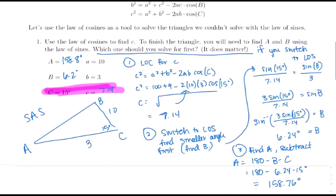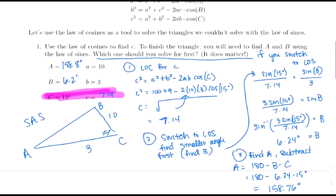Strategy summary: for side-side-side, find the biggest angle with the Law of Cosines first, then switch to the Law of Sines and order doesn't matter. For side-angle-side, find the third side first with the Law of Cosines, then find the smallest angle using the Law of Sines.